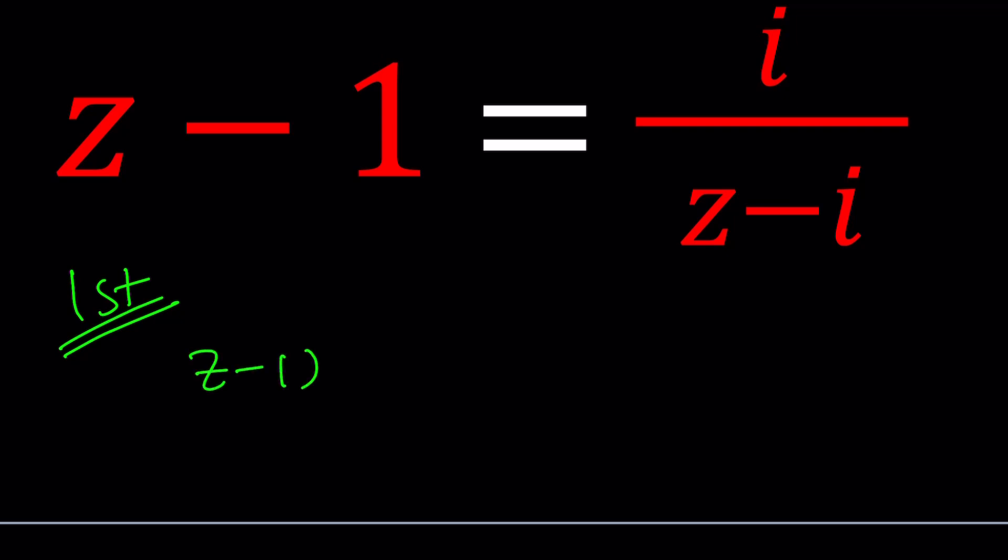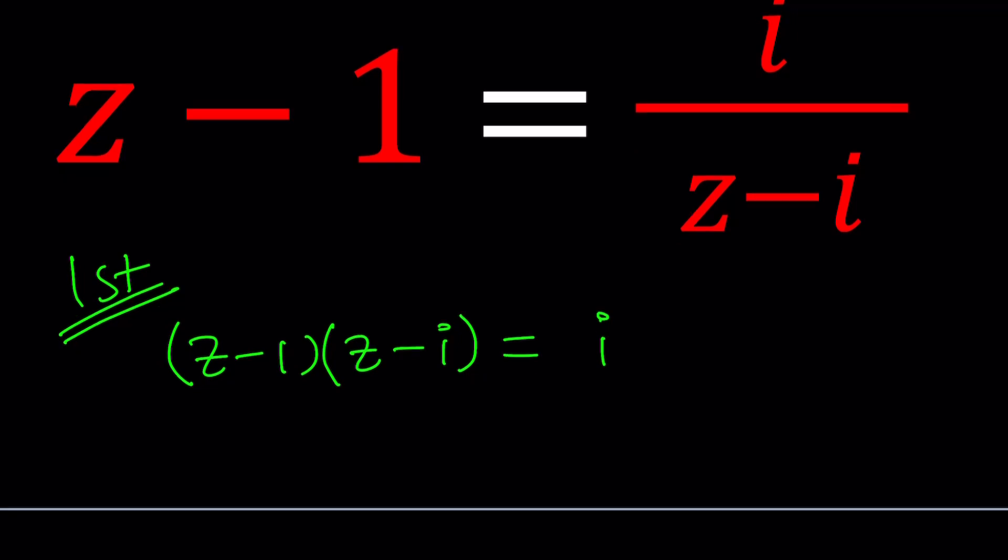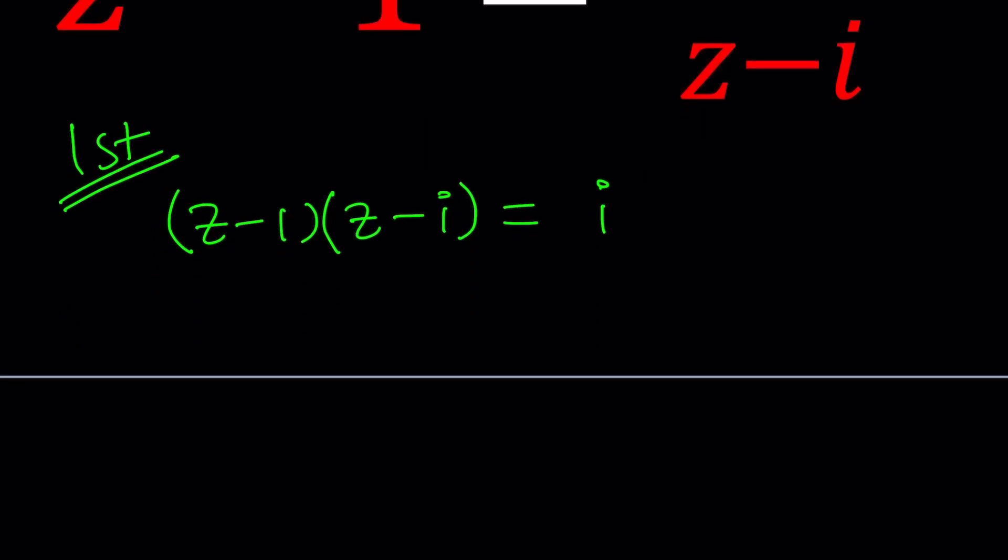Anyways, first method, I'm going to go ahead and cross multiply. Obviously, this is kind of like the obvious method, right? I mean, if you have a fraction, you'll probably cross multiply. And second method is going to use a whole different idea. Anyways, let's go ahead and distribute. If you distribute, you're going to get z squared minus zi minus z plus i equals i.